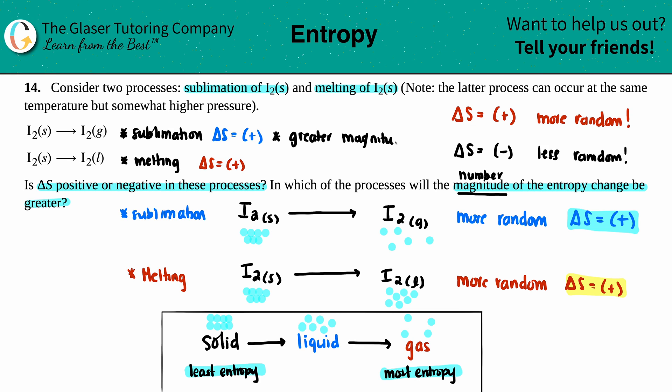And just to put it into perspective—magnitude, just to put it into perspective—maybe this ΔS is like a 100 value. That just means that the ΔS for melting would have to be lower, maybe like 10. I'm not saying that those are the real numbers, but I'm just saying that greater magnitude equals greater number. And that's it.